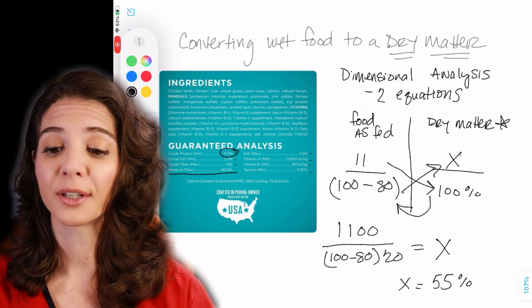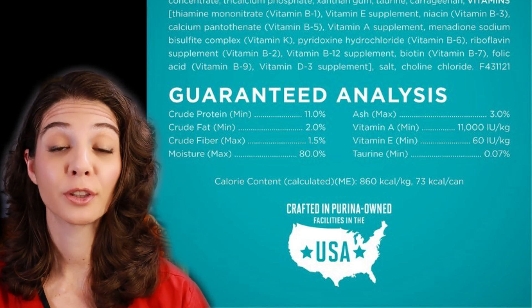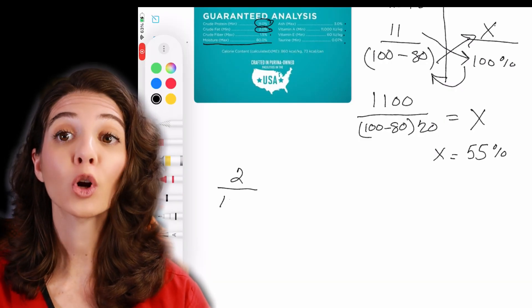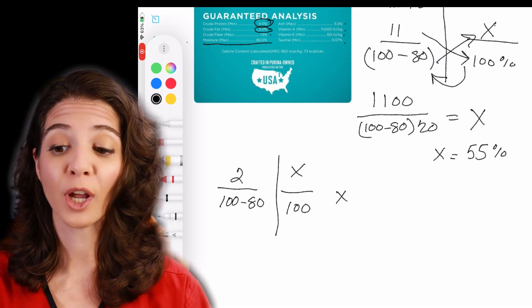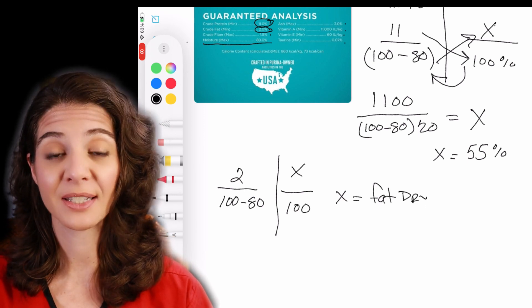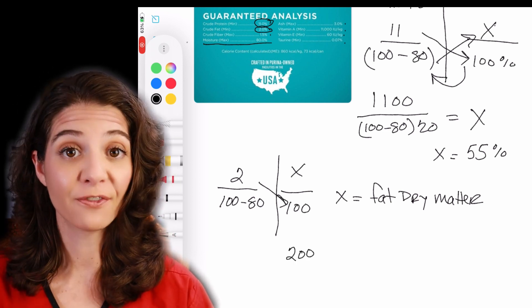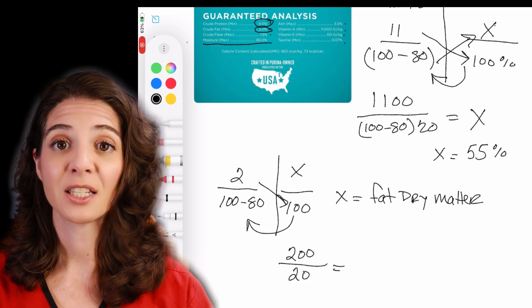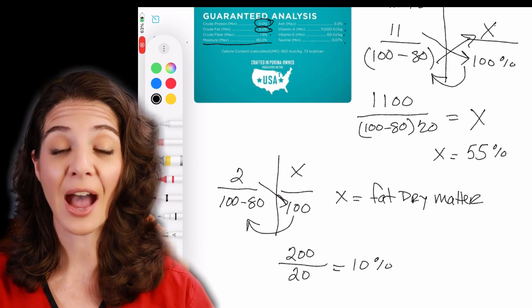Let's do another example using crude fat. They're listing it at 2%. On the left-hand side we have 2% over (100 minus 80), which equals X over 100, where X is fat on a dry matter basis. So 2 times 100 is 200, divided by 20, gives us X. When you divide that out you find that fat is 10% on a dry matter basis.